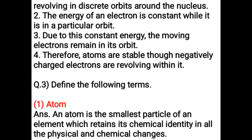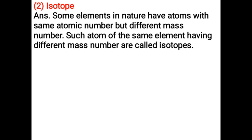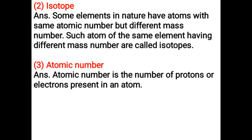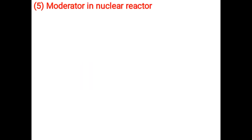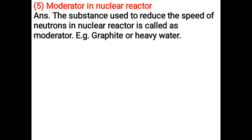An atom is the smallest particle of an element which retains its chemical identity in all physical and chemical changes. The substance used to reduce the speed of neutrons in a nuclear reactor is called a moderator — for example, graphite or heavy water.